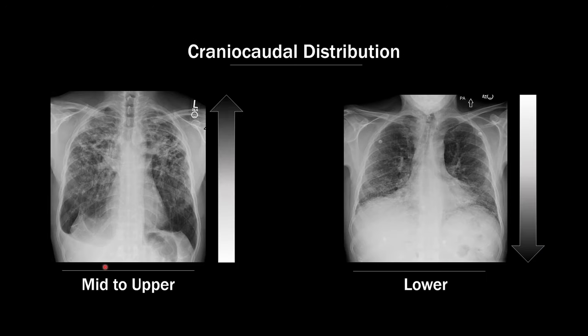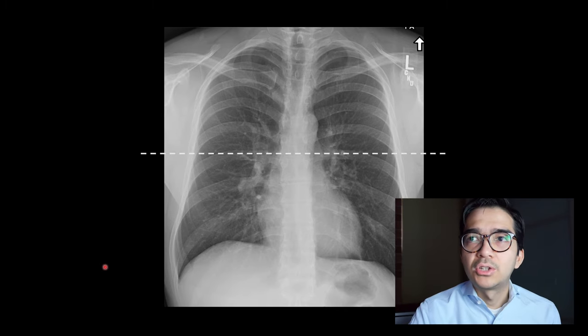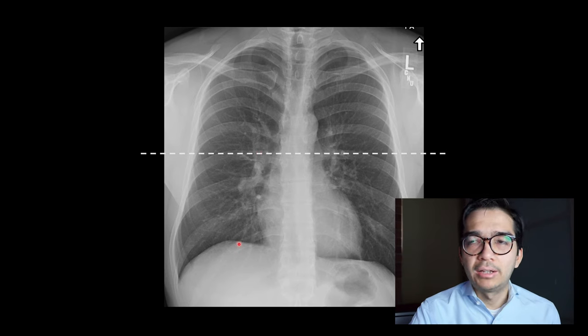One of the best ways to start that process of elimination is to figure out the craniocaudal distribution. You can even do this on a chest X-ray if there's sufficient disease. The two distributions are mid to upper lung predominant, or lower lung predominant. On a normal chest X-ray, the hyla bisect the chest so that there's an equal amount of lung above the hyla as there is below the hyla.